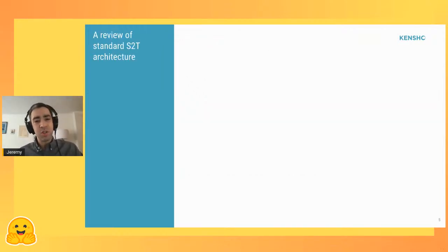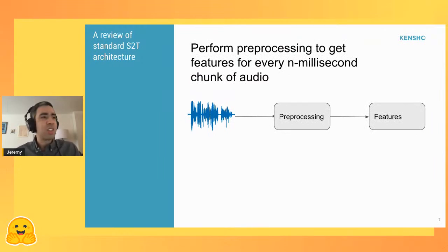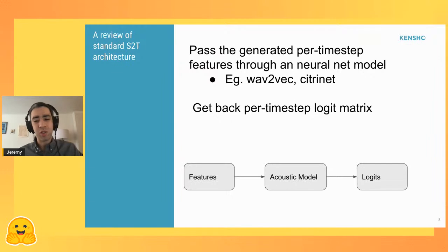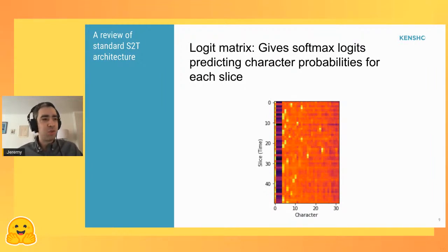A review of a pretty standard modular speech-to-text architecture: the first thing you want to do is start with an audio sample, something like an mp3 or wave file. Then you'll have a pre-processing stage which gives you features for every chunk of audio that's roughly some number of milliseconds long. Once you get those features, you can pass them through some neural net model — something like wav2vec or CitriNet — which gets a per-time-step logit matrix back.